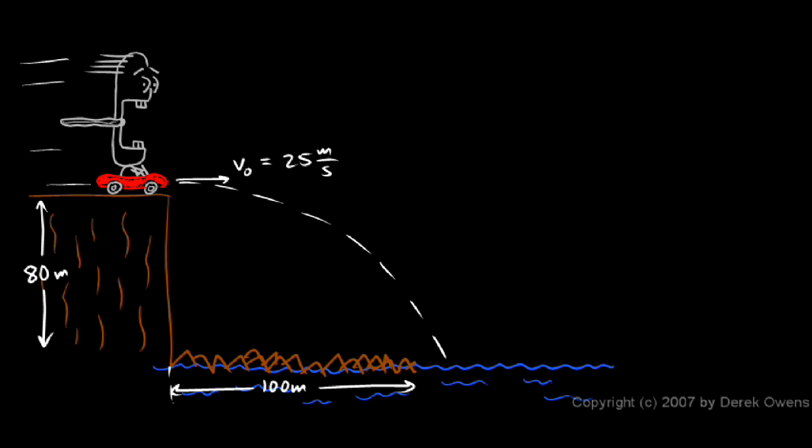His position right there at time zero is the moment he leaves the cliff. That's the beginning of the projectile motion. Now the key to solving this is to consider the horizontal and the vertical motion independently of each other.